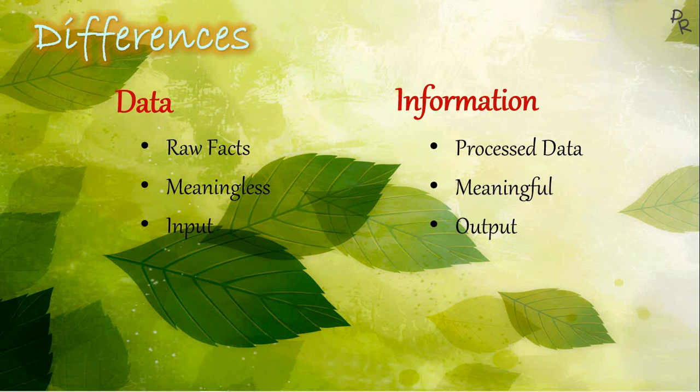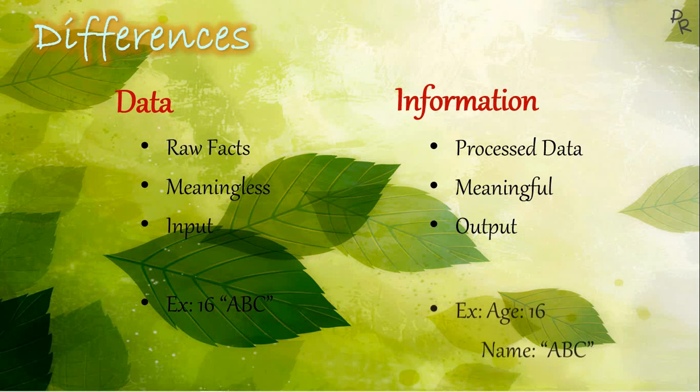For example, we have this data here — that is, '16, ABC' — whose meaning cannot be understood properly. But after processing this data, we may get it as 'age: 16' and 'name: ABC', which is more meaningful.